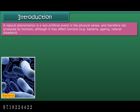A natural phenomenon is a non-artificial event in the physical sense and therefore not produced by humans, although it may affect humans. Examples include bacteria, aging, and natural disasters.